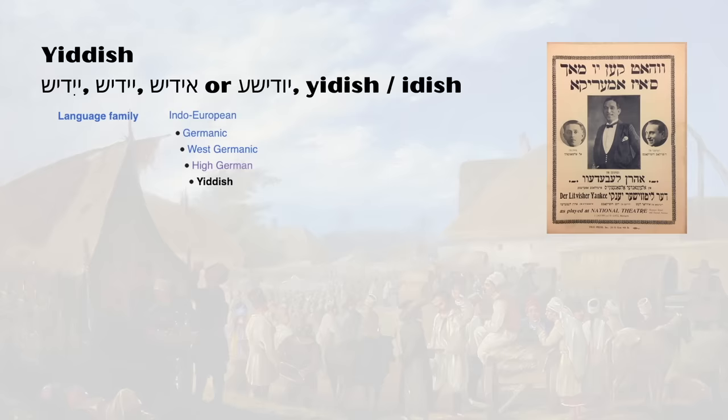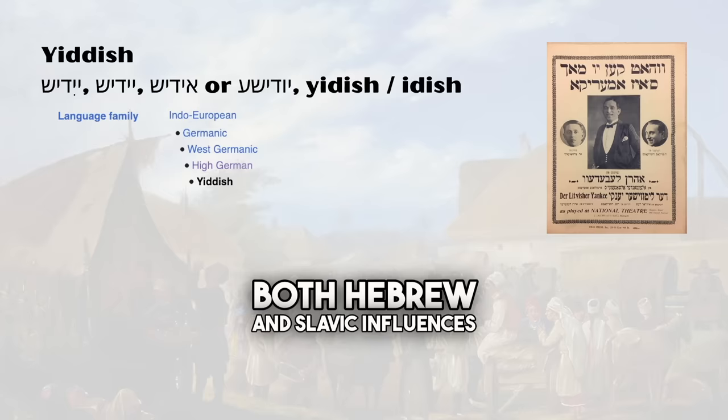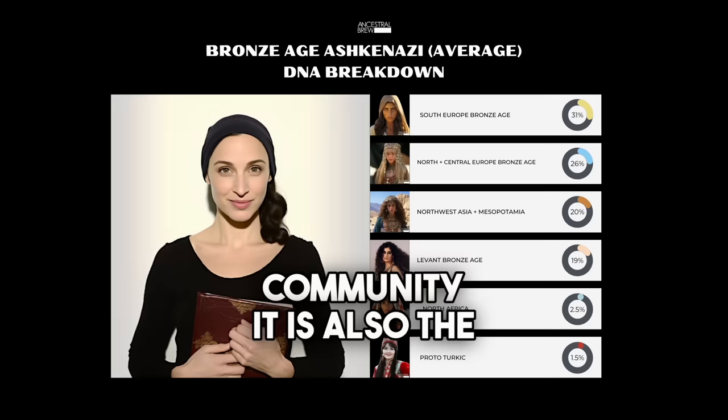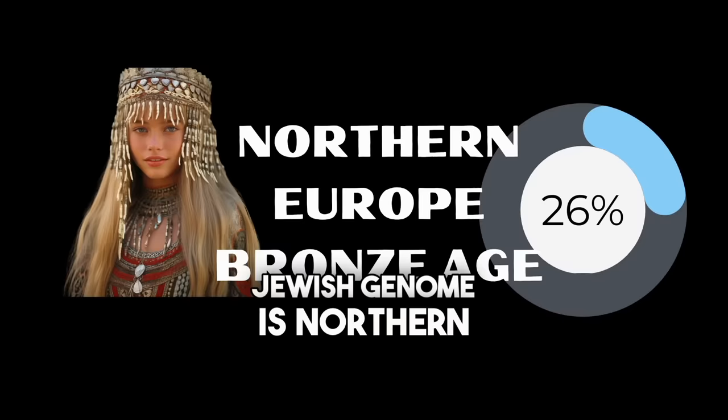This is the reason why Yiddish, a high Germanic language with both Hebrew and Slavic influences, is spoken by the Ashkenazi community. It is also the reason why around 26% of the average Ashkenazi Jewish genome is Northern European in origin.